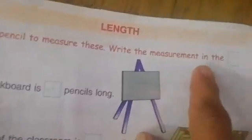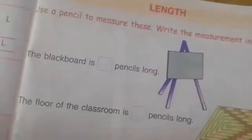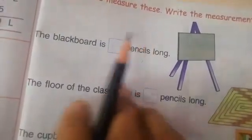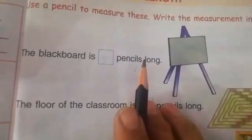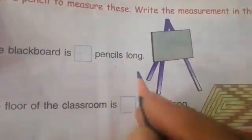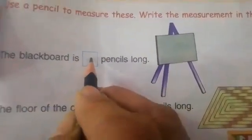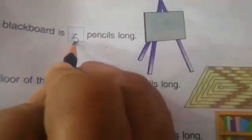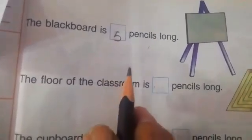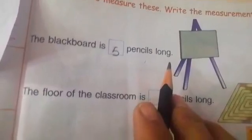Now use a pencil to measure these and write the measurement in the box. The blackboard is dash pencils long. The length of the blackboard is five pencils long. I know the length of your classroom board is five pencils long because I already measured it last year.